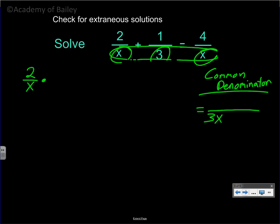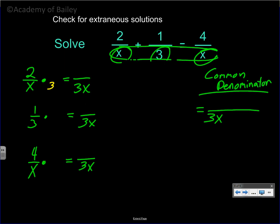We have 2 over x times something to equal something over 3x, and 1 over 3 times something to equal something over 3x, and 4 over x times something to equal something over 3x. We know we have to multiply x by 3 to get 3x, so we multiply the top number by 3 — giving us 6 on top. For 1 over 3, we multiply 3 by x to get 3x, so multiply the top by x — that's x. For the last fraction, multiply the bottom by 3 to get 3x, so multiply the top by 3 — 4 times 3 is 12.